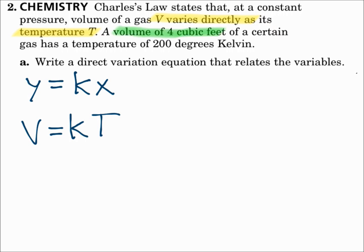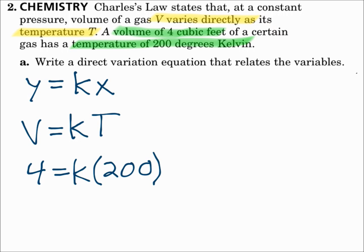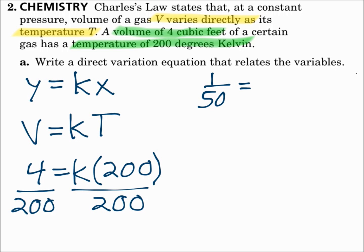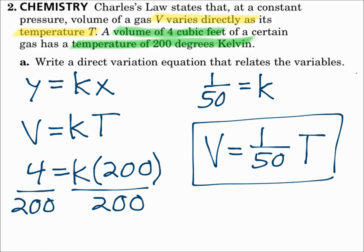Now find k. A volume of 4 cubic feet means substitute 4 for v, and a temperature of 200 degrees Kelvin means substitute 200 for T. Solve for k by dividing both sides by 200, so k is 1 fiftieth. Rewrite the equation: v equals 1 fiftieth times T. Find k, and then rewrite your formula using that value of k.